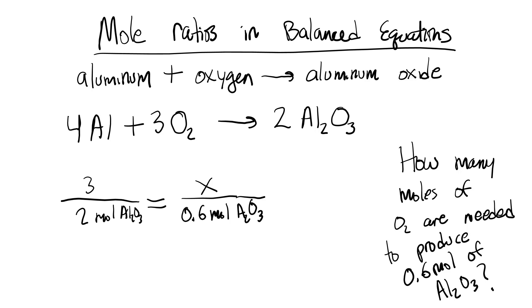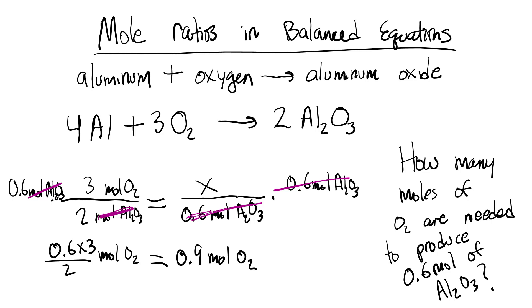Okay I'm going to multiply again both sides by 0.6 moles Al2O3. I cross out those on each side, just the moles of Al2O3 cancel out and so I'm left with an equation: 0.6 times 3 divided by 2 moles of O2 and I'm going to get 0.9 I believe, moles of O2 are needed to create 0.6 moles of aluminum oxide. That's about it, any questions?